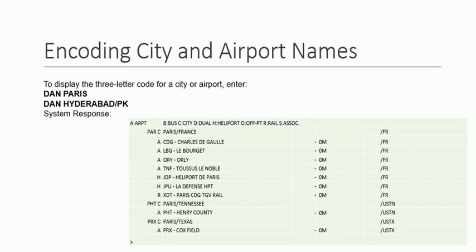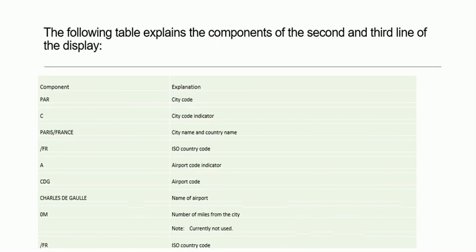In the next part, you can see it provides further details of the different states in Paris. So when you type DAN Paris it will provide you this display, and similarly when you write DAN Hyderabad/PK it will give you details about different airports or helipads in that specific city. This table explains the components of the second and third line of the display we have seen.